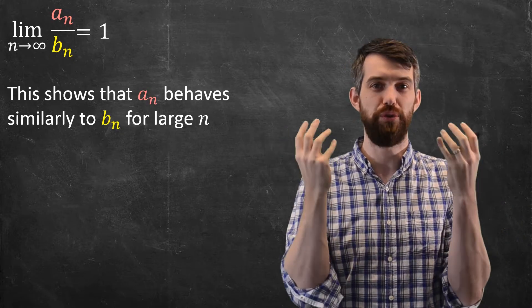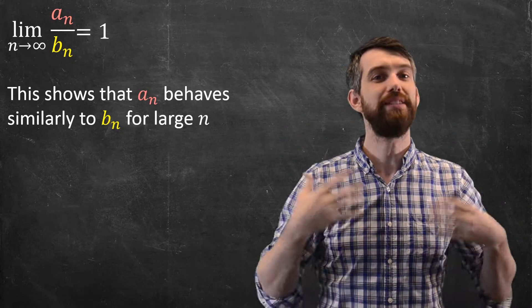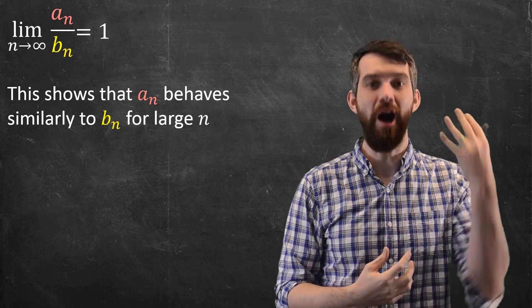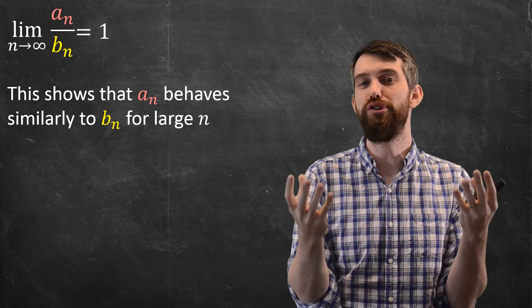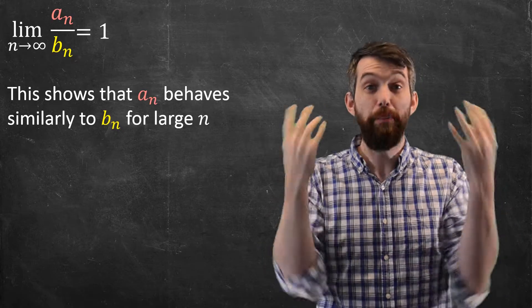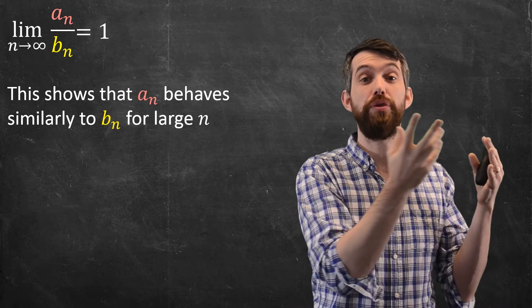And as your n goes to infinity, the a_n and the b_n get closer and closer and closer together. So it seems very reasonable that the sum of the a_n's and the sum of the b_n's, well, maybe not converge to the same thing, they either both converge or they both diverge.